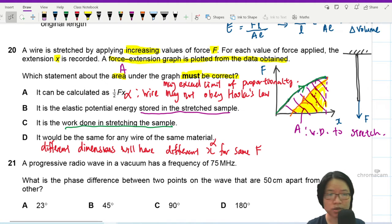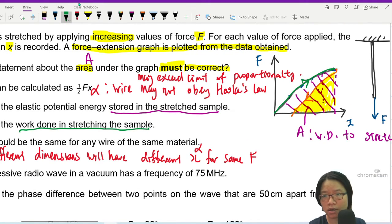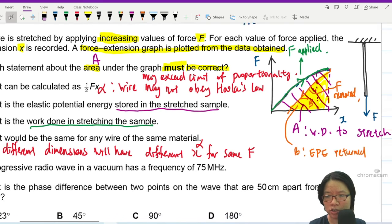So maybe I can zoom in a bit. So this green is F applied. This orange is F removed. So this yellow color area, let's say this is area B. Area B is the elastic potential energy returned when force is removed.